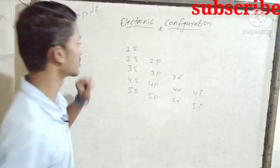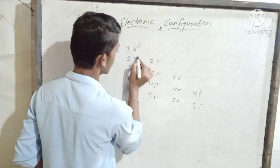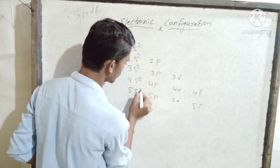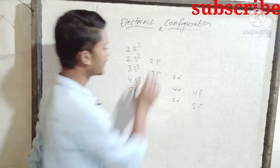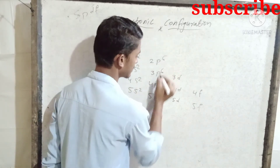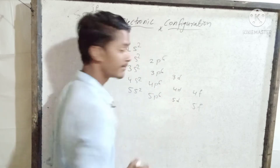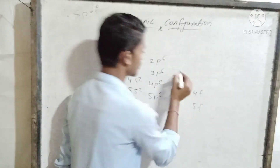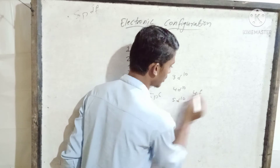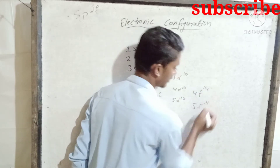In S, there are two electrons — so S has two fields. In P, there is 6. In D, there is 10. In F, there is 14. Write it down.